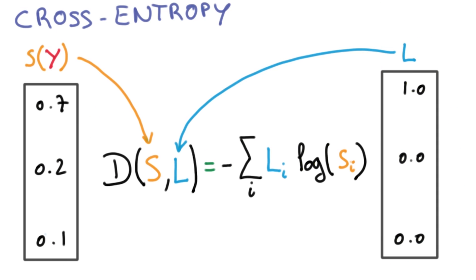The natural way to measure the distance between those two probability vectors is called the cross entropy. I'll denote it by D here for distance. In math, it looks like this.